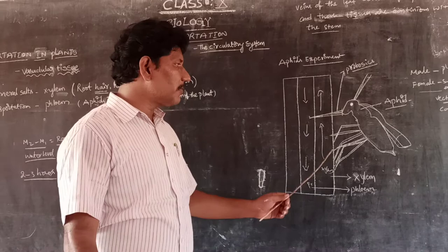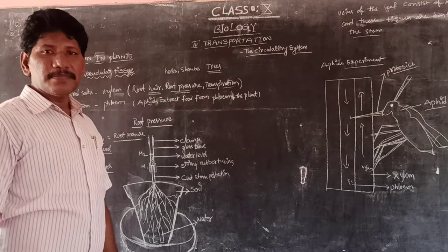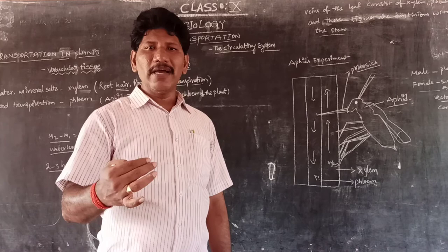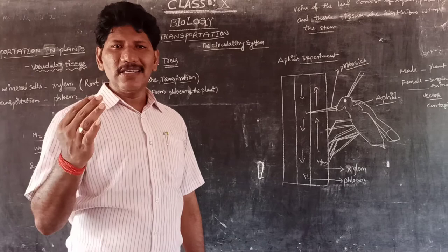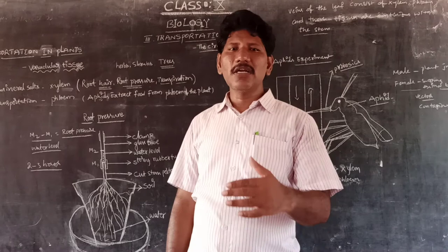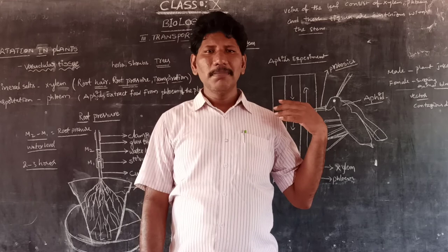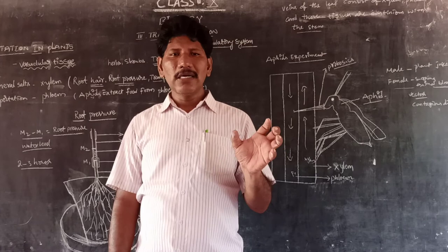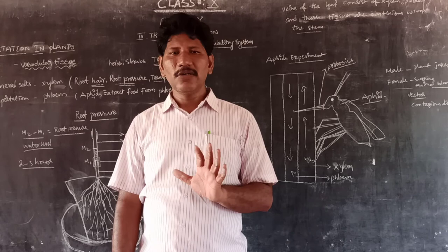In conclusion, transportation supplies nutrients — in the form of solids, liquids, and gases — to the required cells. Animals have a circulatory system consisting of blood, blood vessels, and heart. Plants have xylem for water and mineral salt transport, and phloem for food transportation. Thank you, children. We conclude this topic on transportation and will move to the next topic — the fourth chapter — in the next video. Thank you very much.